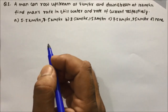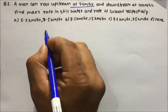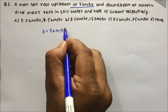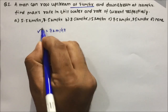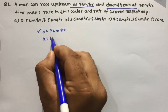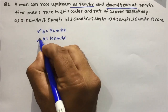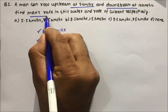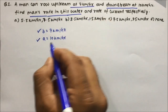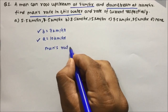Question number 1: A man can row upstream at 7 km per hour — so upstream B equals 7 km per hour — and downstream at 10 km per hour — so downstream A equals 10 km per hour. They are asking us to find the man's rate in still water, which is nothing but the boat speed.